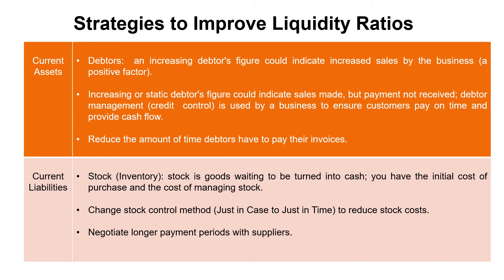For exam questions on improving liquidity ratios, focus on current assets and current liabilities. For debtors, offer discounts for early payment — for example, 5% discount for paying in 30 days instead of 60. You could also cut the time debtors have to pay, though this could be a problem if competitors continue to offer 60 days, as customers may migrate to the competition and you could lose sales — unintended consequences of the action. This is analysis and evaluation.